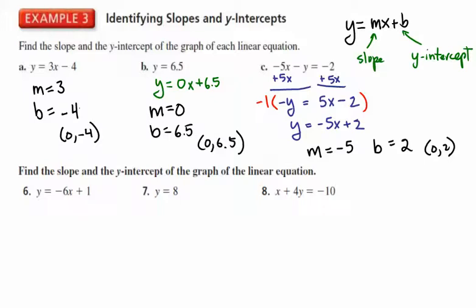Let's go on to example 6. The slope is easily identifiable as the number multiplied times x. The y-intercept is the number added or subtracted. We can write that as b equals 1 or as an ordered pair (0, 1).